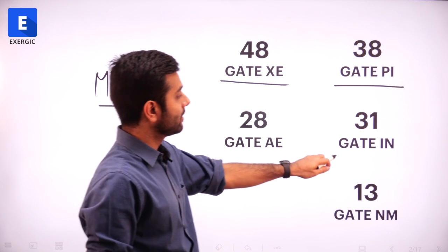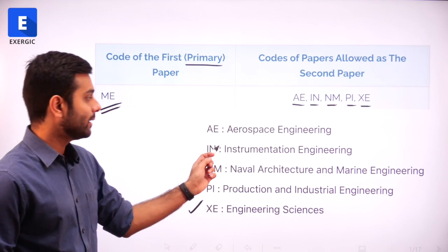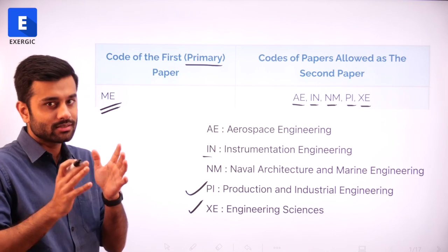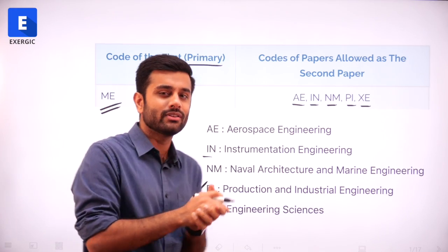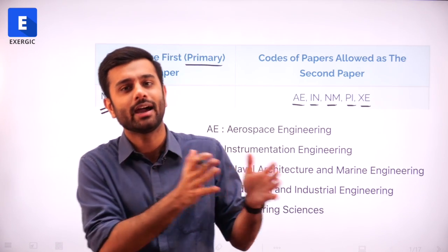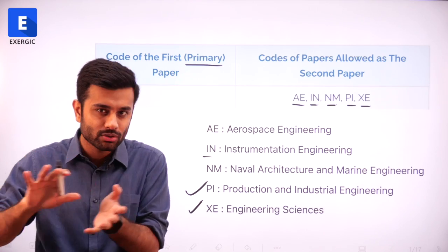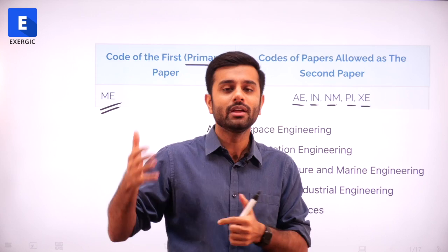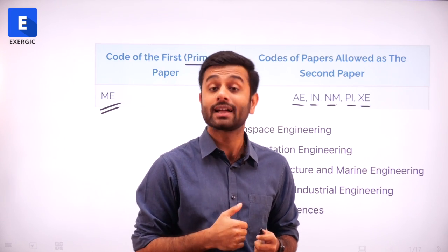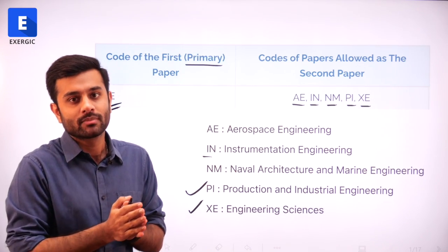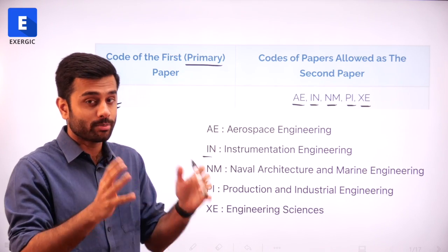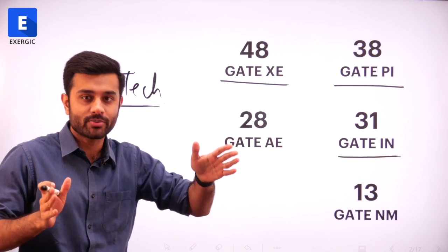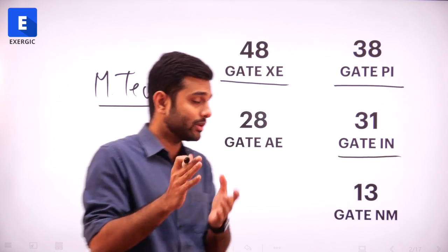XE is first and PI is second. Third is IN, which is Instrumentation Engineering. Generally, you will see this stream being linked with electrical branches — EEC, IN. It more or less bundles with those fields, but it's a good option for those who want to progress their career in a different direction. So IN is in the top three options you can have other than ME for the second paper.